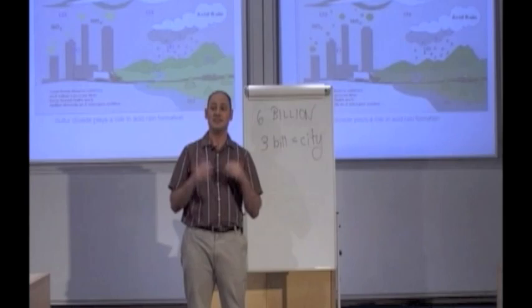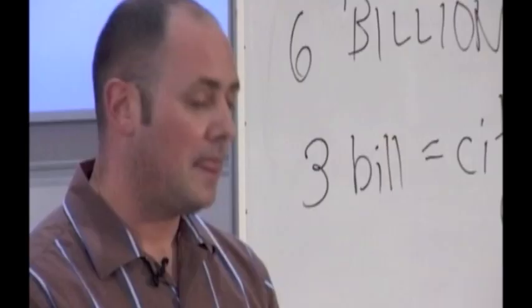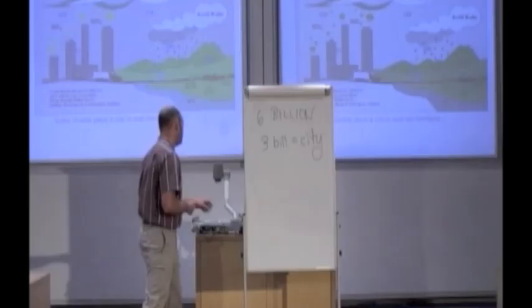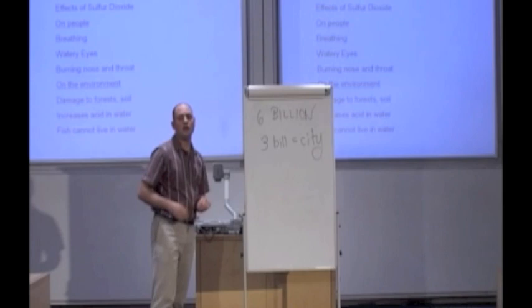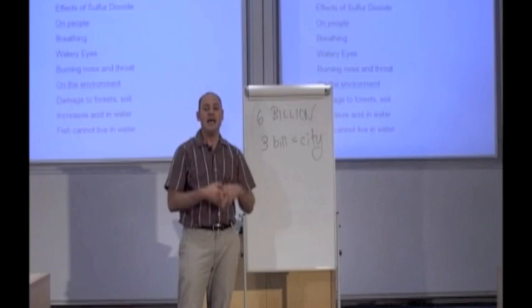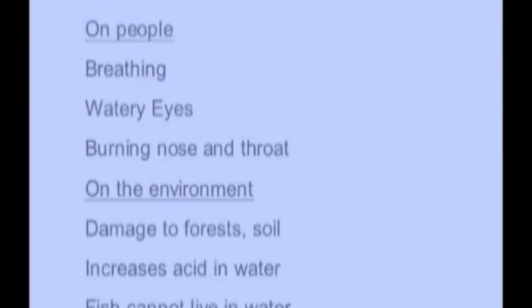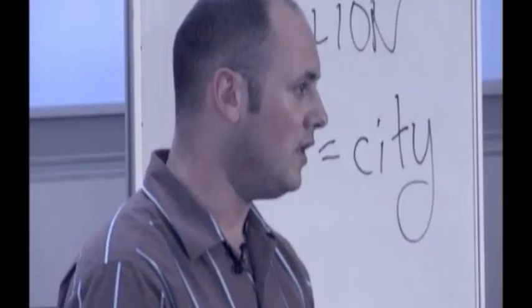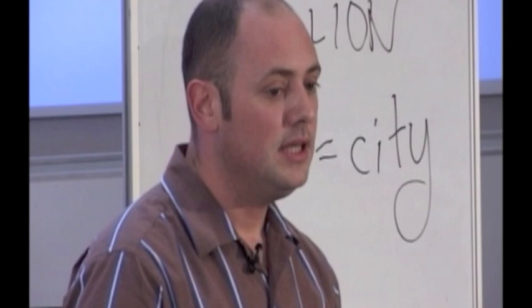Let me spell out the problems sulfur dioxide can cause for both people and the environment. People exposed to SO2, many of them living in cities, have difficulty with things like difficulty with breathing, watering eyes, and burning nose and throat. For some, these effects are temporary, but in other cases SO2 can actually cause permanent damage.